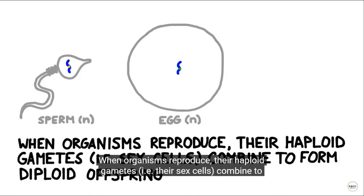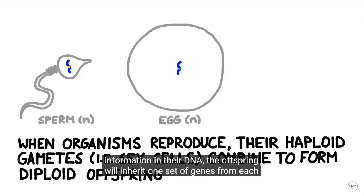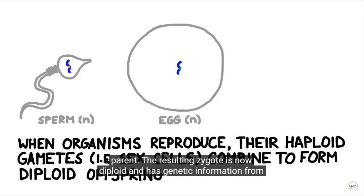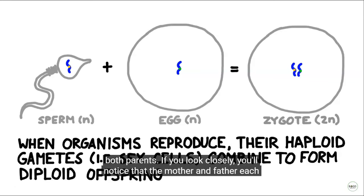When organisms reproduce, their haploid gametes — i.e. their sex cells — combine to form diploid offspring. Since the gametes carry the genetic information in their DNA, the offspring will inherit one set of genes from each parent. The resulting zygote is now diploid and has genetic information from both parents.